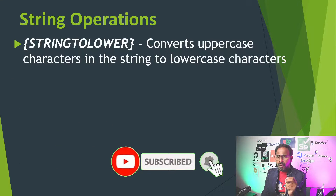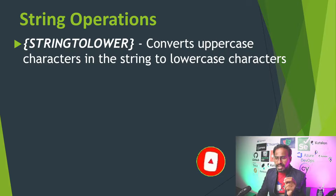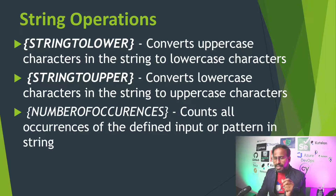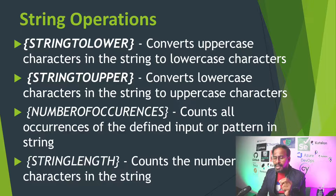Let us first understand what string to lower is. String to lower is an operation which converts uppercase characters in the string to lowercase characters. String to upper converts lowercase characters in the string to uppercase characters. Number of occurrences counts all occurrences of a defined input or pattern in the string. String length counts the number of characters in the string. Now let us jump onto the system and see how to perform these operations using Tricentis Tosca.